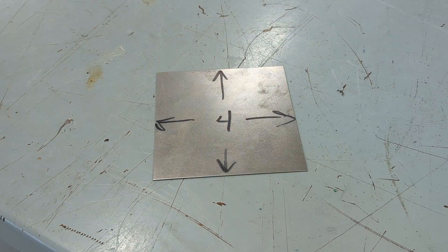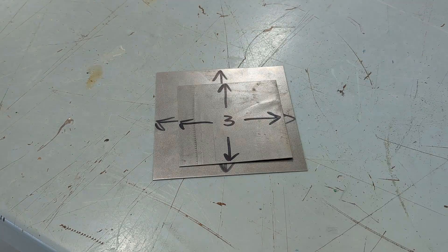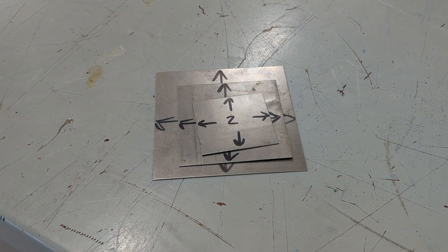To start, you're going to cut your metal into squares. Each piece should be around an inch or so bigger or smaller than the last one you made.